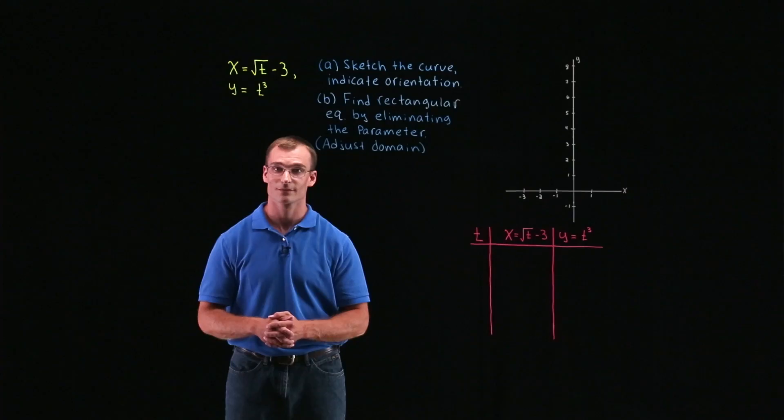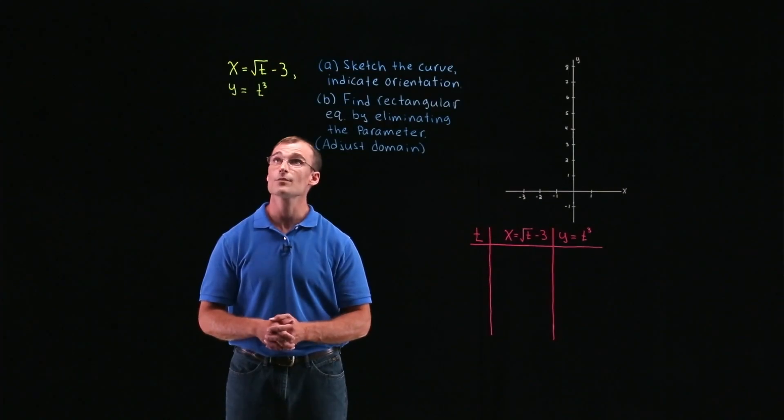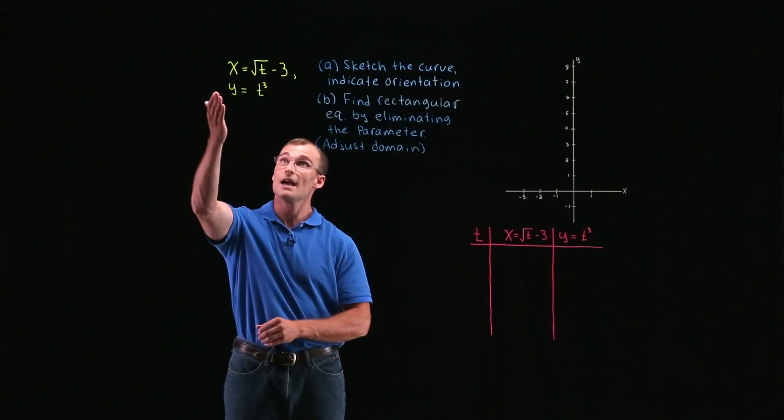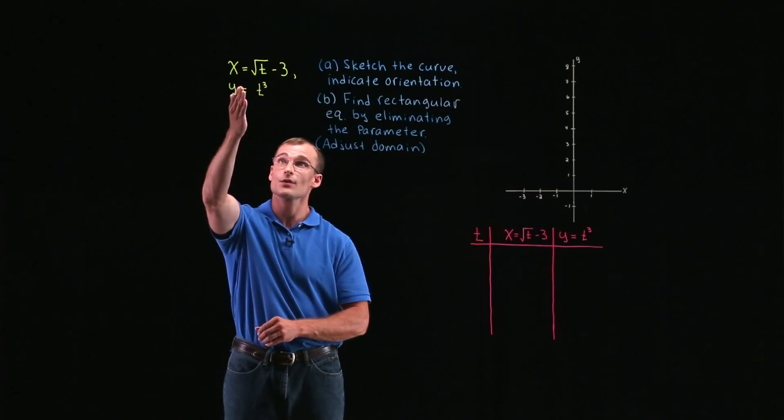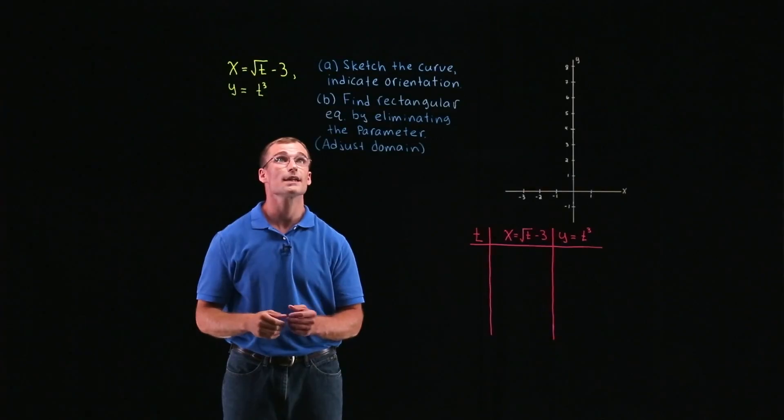Hello, everybody. I'm Adam. In this problem, for the given parametric equations, which we have as x equal to square root of t minus 3 and y equal to t cubed, we're going to do two things.